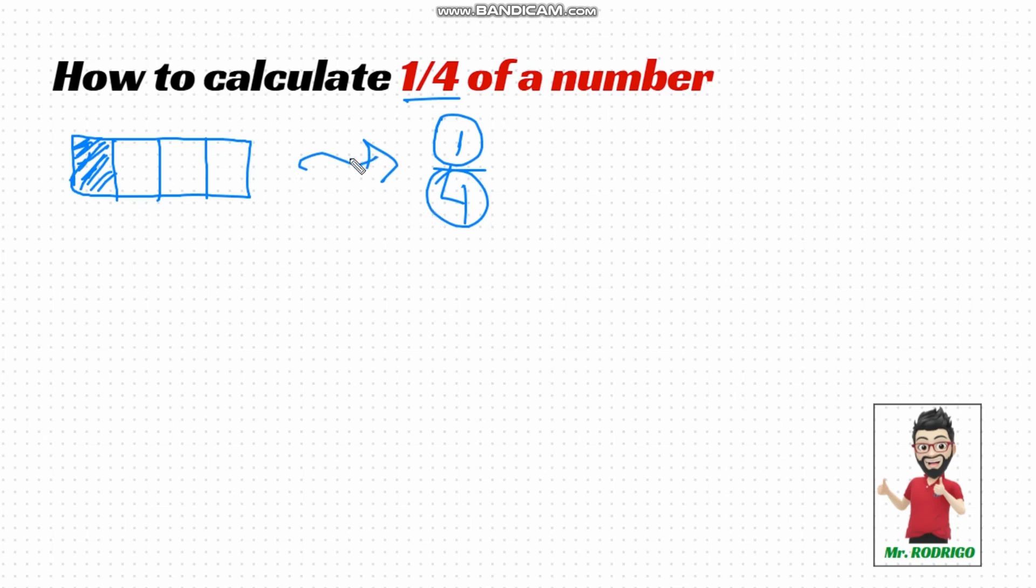What can we conclude here? That calculating a quarter of an amount is simply dividing by four. Look, it's just dividing by four. I divided it here into four equal parts and took only one of those parts. So, calculating a quarter of a number is just dividing by four.